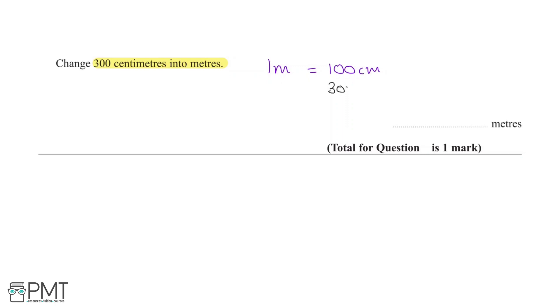If we want to change 300 centimeters, we need to first know what we did to this side and then apply it to this side. So, what did we multiply 100 by to get 300 on the right-hand side?